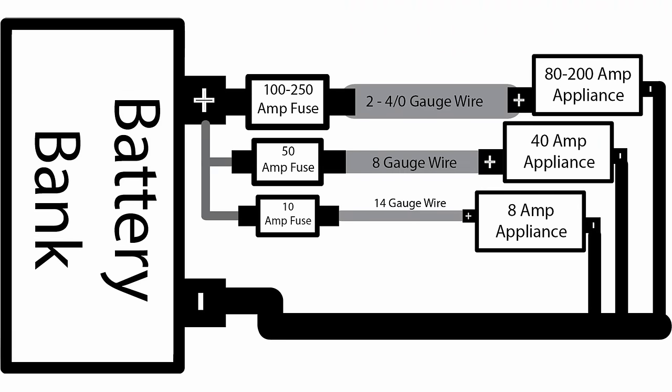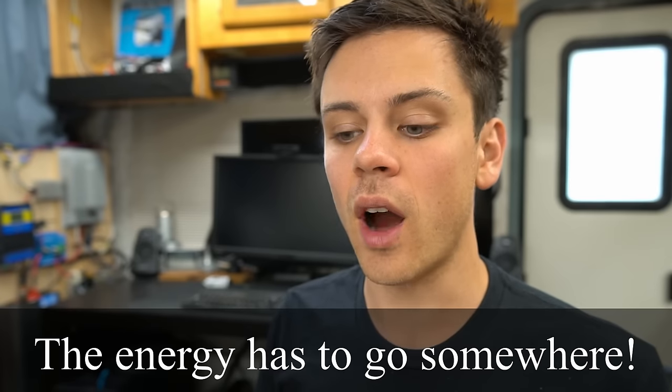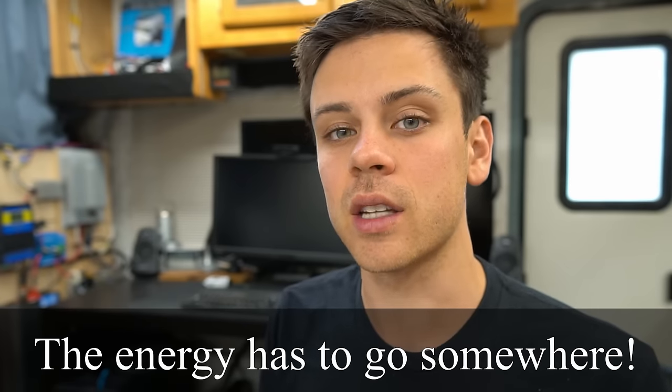Now that we understand voltage, let's talk about amperage. Amperage is how much electricity is flowing through the wire, and it will determine how big the wire needs to be when attaching electrical components to each other. In the garden hose example, the amperage equivalent is how thick the hose is — the thicker it is, the more water you can carry. If a wire is bigger, you can transmit more electricity through it. If a wire is not large enough to carry a load, the excess energy will be given off as heat, and that wire can generate so much heat that it can cause a fire.